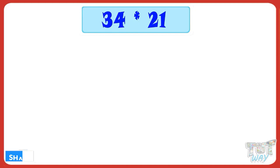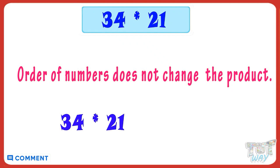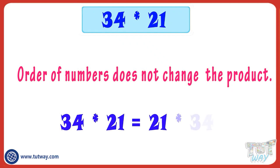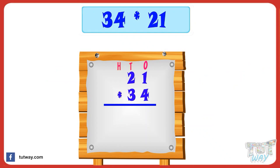Remember, order of numbers does not change the product. That is, 34 multiplied by 21 equals 21 multiplied by 34. In any sum — addition, subtraction, or multiplication — we first align the numbers.